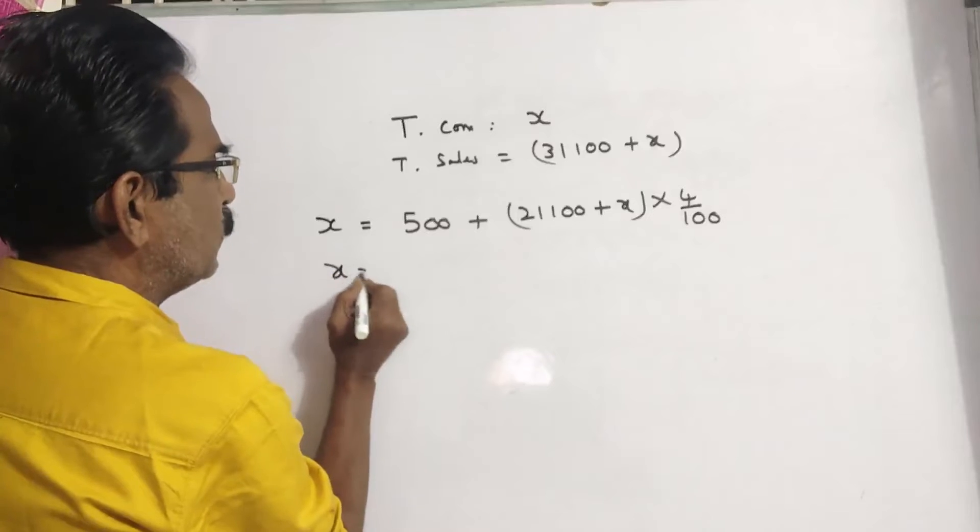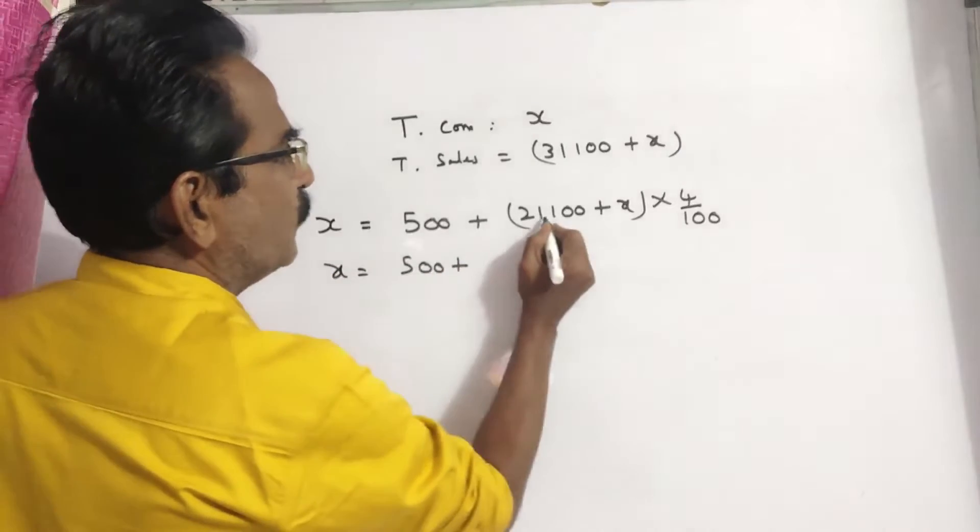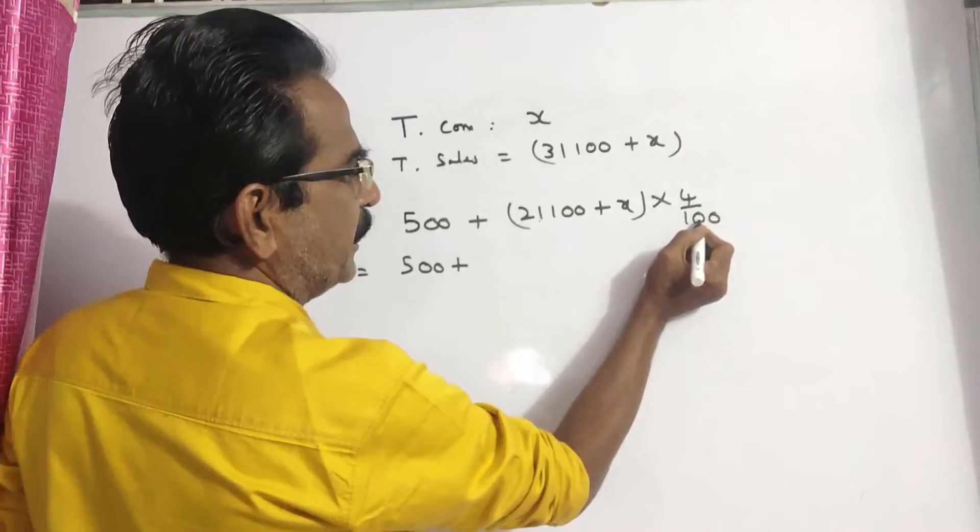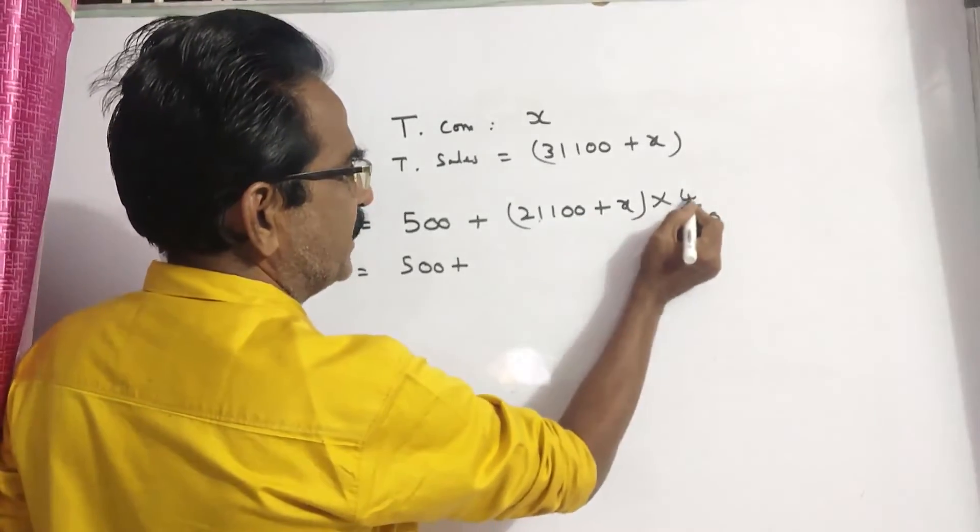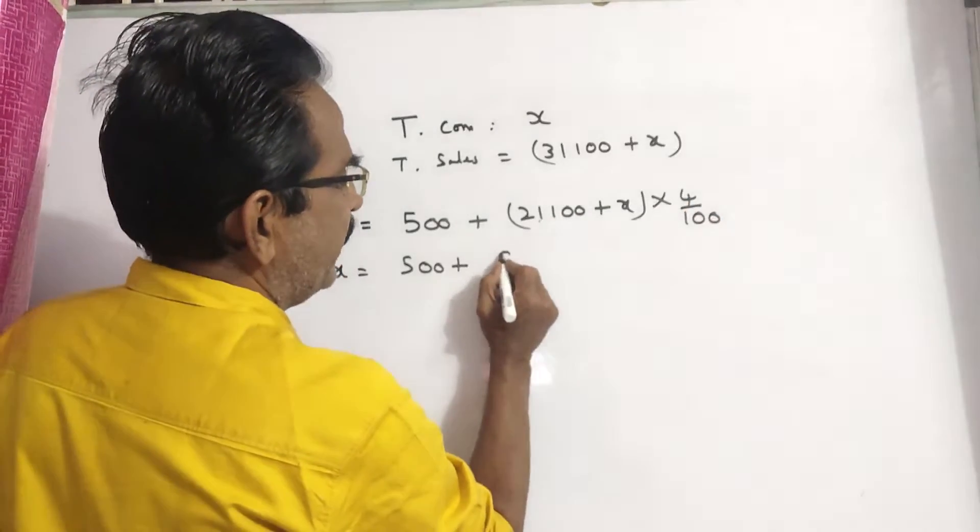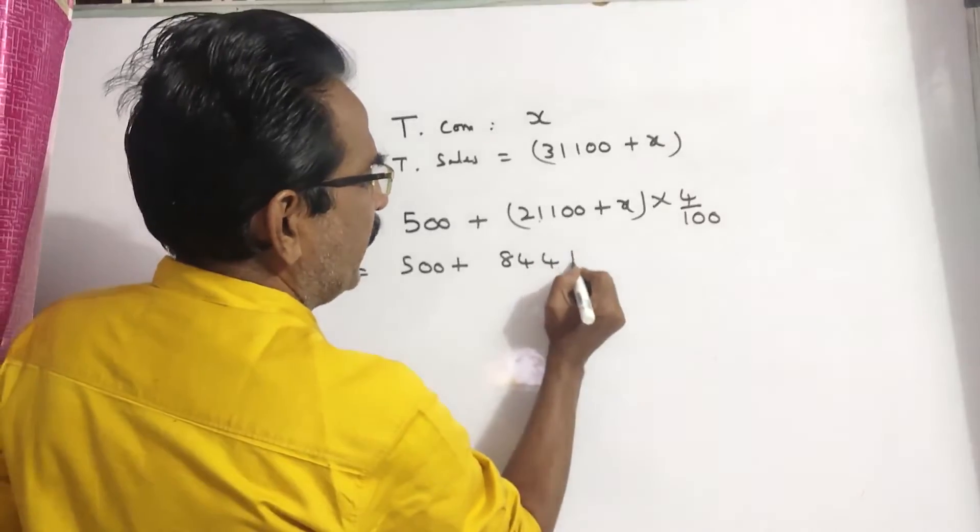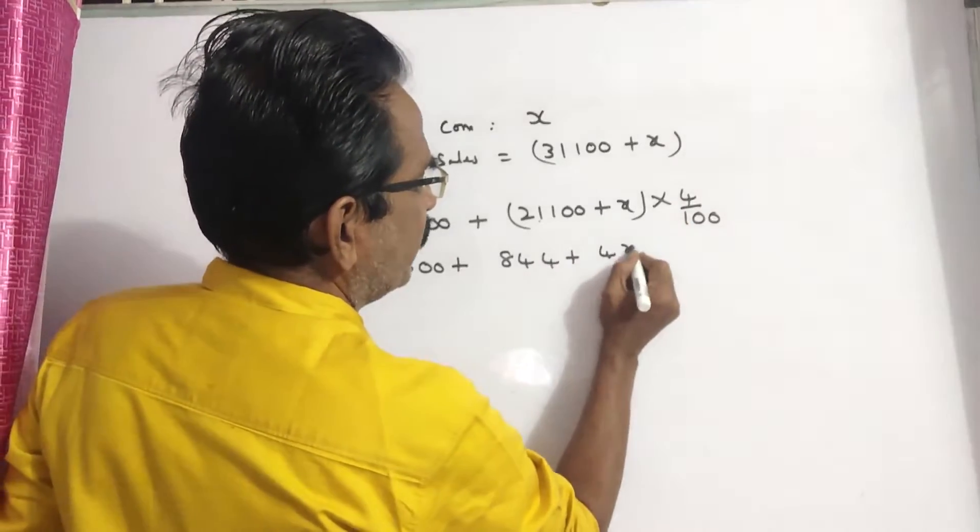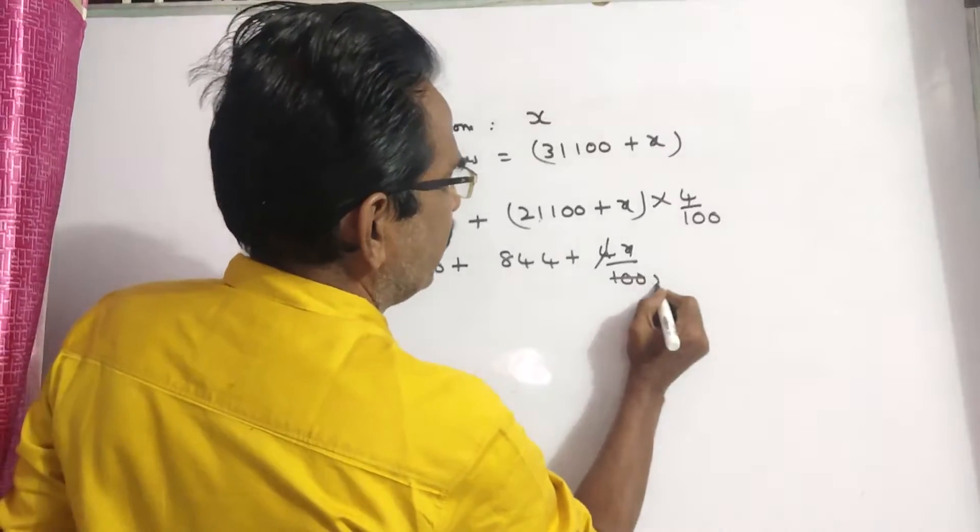Now, X is equal to 500 plus 21,100 into 4 by 100, means 100 gets cancelled for 2,100. 844 plus 4X by 100. 4X by 100. 4 into 25.